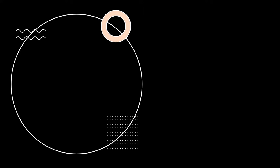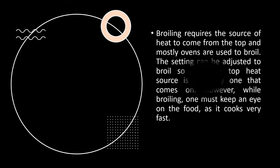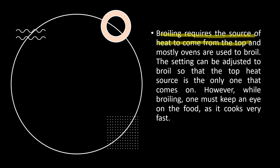Broiling. Broiling requires the source of heat to come from the top, and mostly ovens are used to broil. The setting can be adjusted to broil so that the top heat source is the only one that comes on. However, while broiling, one must keep an eye on the food as it cooks very fast.